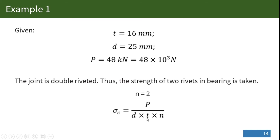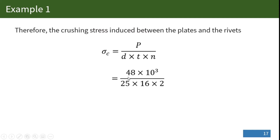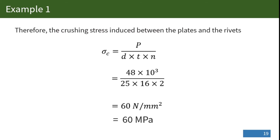The other variables d, t, and P are given, so substituting values: the crushing stress induced between the plates and the rivets is found by substituting P = 48,000 N, d = 25 mm, t = 16 mm, and N = 2 into the bearing stress equation. The result is a crushing stress of 60 newtons per mm squared, which is equivalent to 60 MPa.